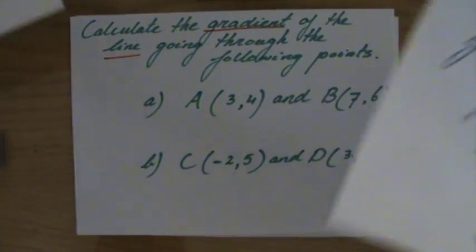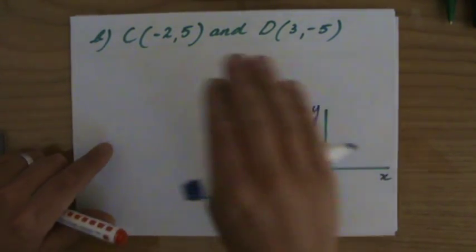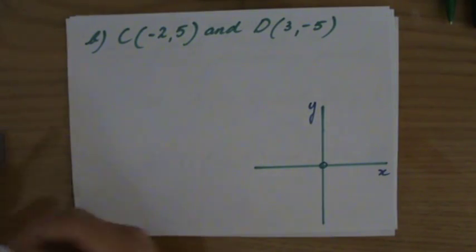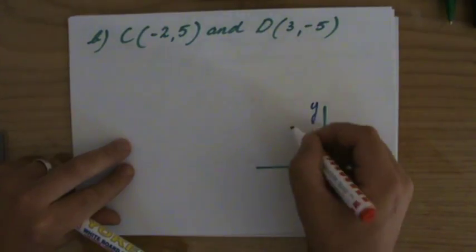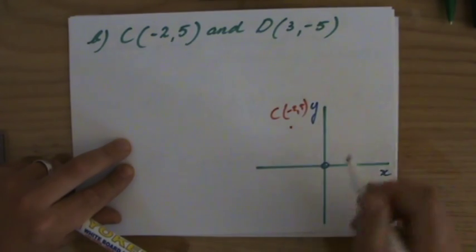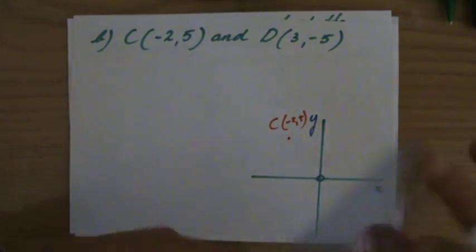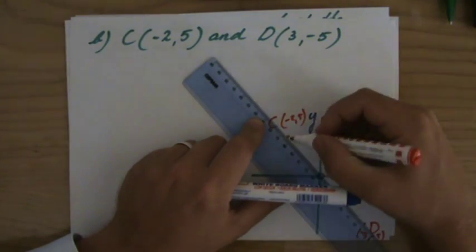Okay, now the second question, question B. I wrote it here. What is the gradient of the line going through point C and point D? Now minus five, it's all the way down there. D is (3,-5). Okay, it's a sketch.